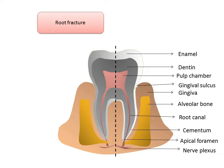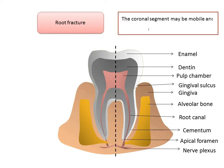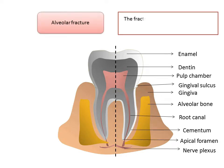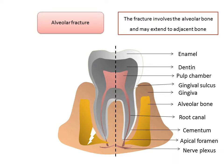Root fracture: the coronal segment may be mobile and displaced. Only the root portion is involved; the crown is not affected. The fracture can be oblique, vertical, or horizontal. Alveolar fracture involves the alveolar bone and may extend to the adjacent bone. It commonly exhibits segment mobility and derangement of the occlusion.